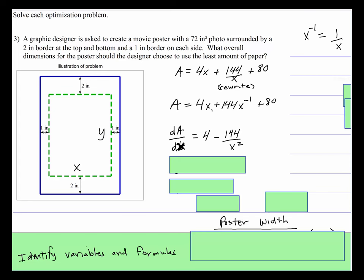And the derivative of this right here, derivative of 4x is 4. The derivative of 144x to the negative first, would be, you'd bring that negative 1 down in front. So it'd be negative 144 times x to the negative second, which then you bring that down to the denominator. And the derivative of a constant is zero.